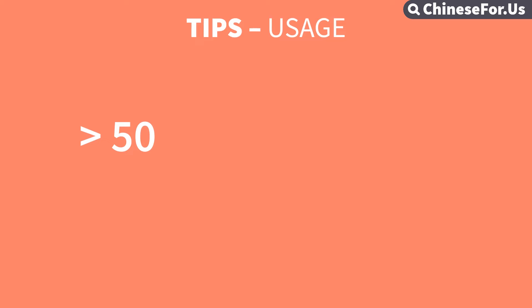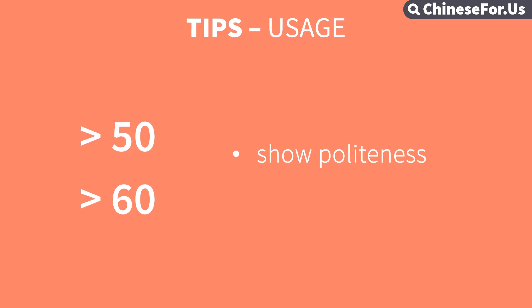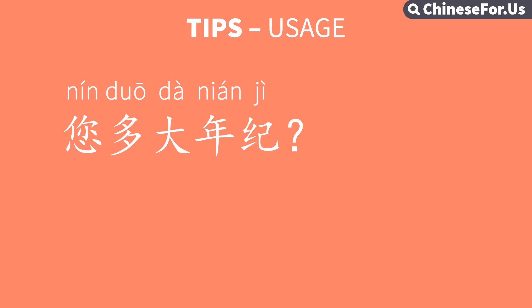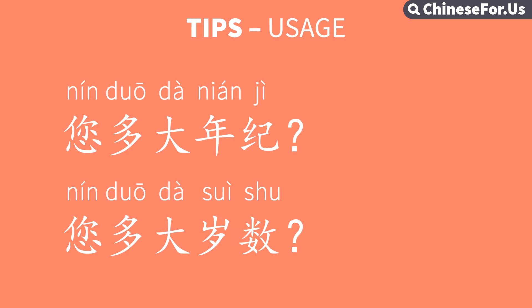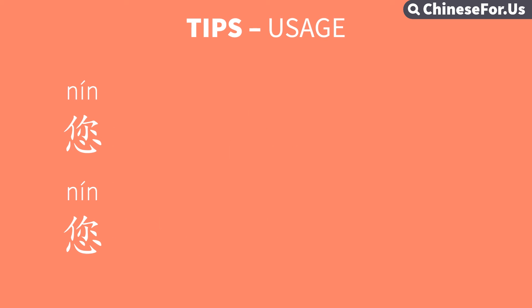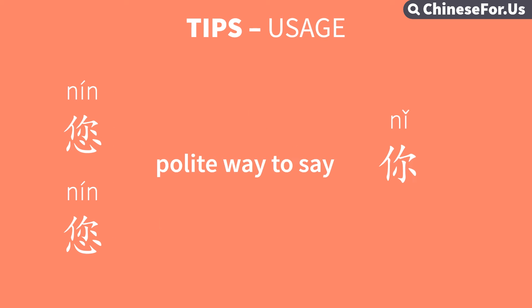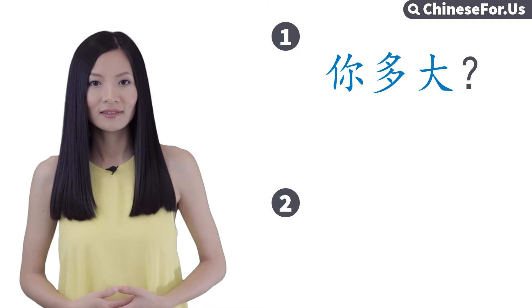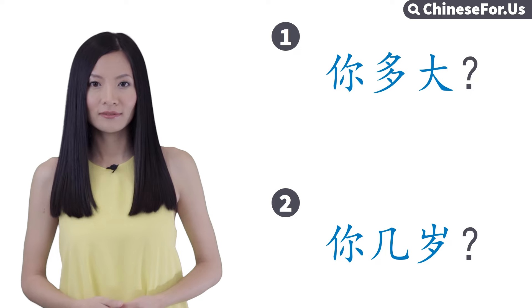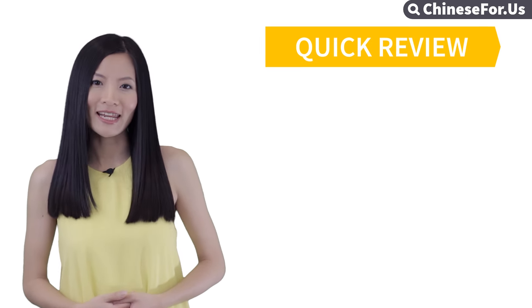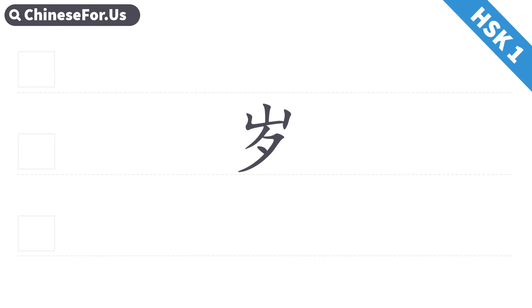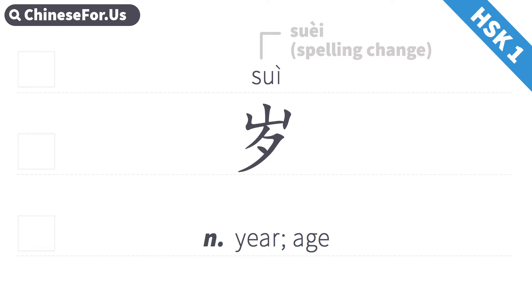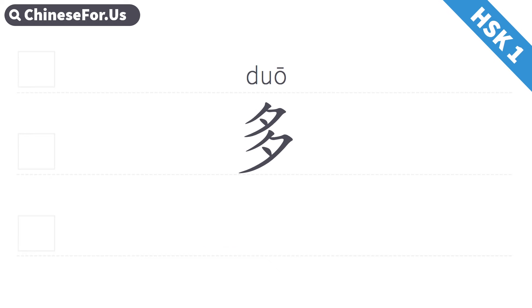And if you want to ask people who are over 50 or 60, who you'd like to show your politeness and respect to, you don't use these two ways — there are two more ways. 你多大? 你多岁?